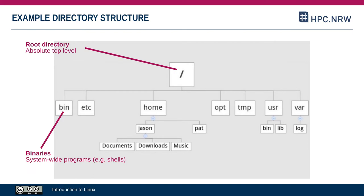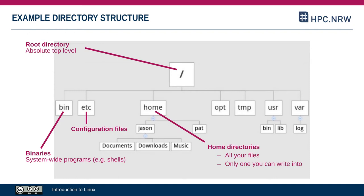The bin directory contains binaries — for example, the programs that make up the shell you use. The etc directory contains configuration files for many programs. The home directory is where you spend most of your time as a regular user. It contains one subdirectory for every user, holding all the files that user owns. It's usually the only directory where that specific user can alter anything; all others are protected and can only be accessed by admins.